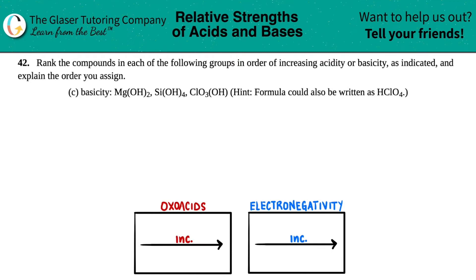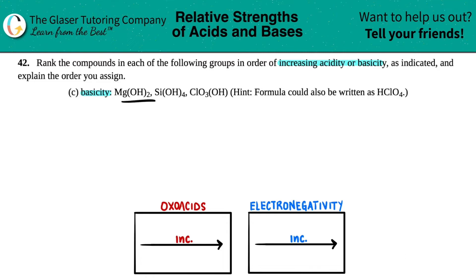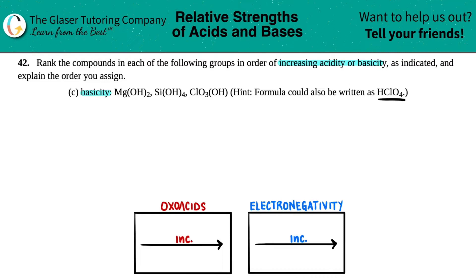Number 42: rank the compounds in each of the following groups in order of increasing acidity or basicity as indicated. In this case, letter C, we have to go based off of basicity. They give us three different compounds: Mg(OH)₂, Si(OH)₄, and ClO₃OH. They give a hint that the formula could also be written as HClO₄.